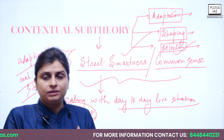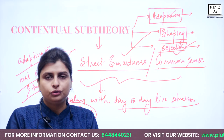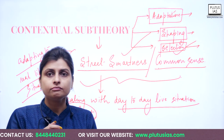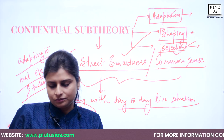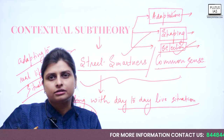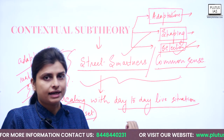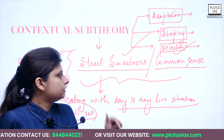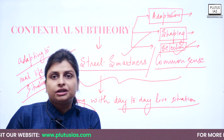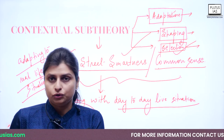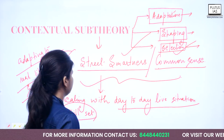Shaping means bringing necessary changes so you could shape yourself in that environment — including changes in the education system. Selection means choosing the environment you have to live in in order to survive these changes. That concludes the contextual sub-theory.